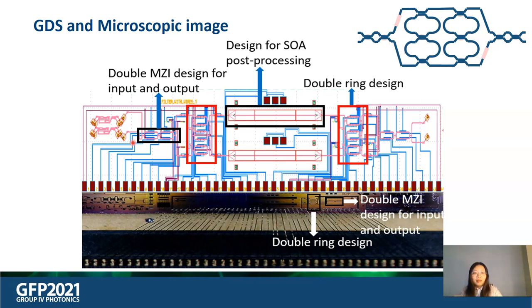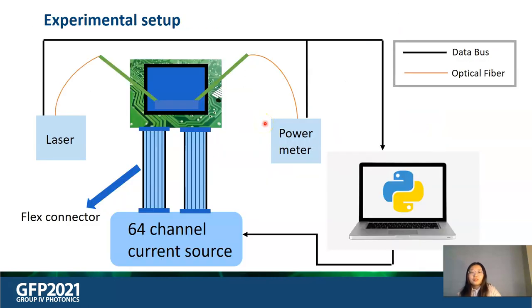the spectrum. It will give us a more broadband response. The design also incorporates a placeholder for later semiconductor optical amplifier post-processing using the transfer printing. The experimental setup is composed with a tunable laser as input light source, a power meter to measure the spectral response for the drop and through port and 64-channel current source to control the